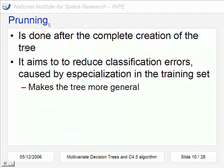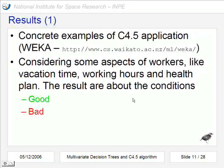In this case the pruning is done after the complete creation of the tree. And the aim is to reduce classification errors that are caused by specialization in the training set. The general aim is to make the tree more general.